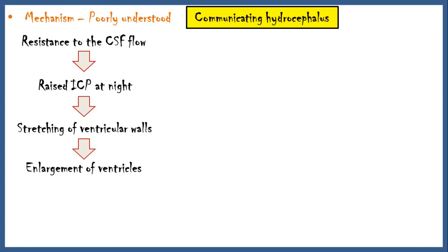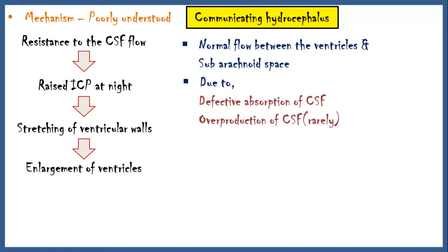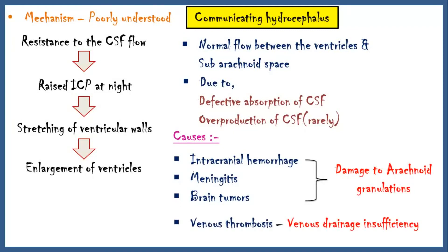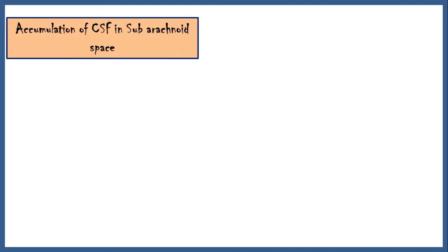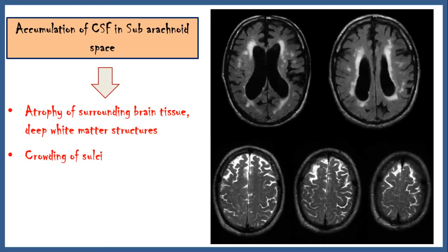In communicating hydrocephalus, there is normal flow of CSF between the ventricles and subarachnoid space. This condition occurs due to defective absorption of CSF into the venous blood, and rarely due to overproduction of CSF. Causes include intracranial hemorrhage, meningitis, and brain tumors, which damage arachnoid granulations, as well as venous thrombosis, which causes venous drainage insufficiency and impaired CSF absorption. Accumulation of CSF within the subarachnoid space leads to atrophy of surrounding brain tissue, deep white matter structures, and crowding of sulci. This image shows the atrophy of brain tissue and crowding of sulci due to increased pressure within the subarachnoid space.